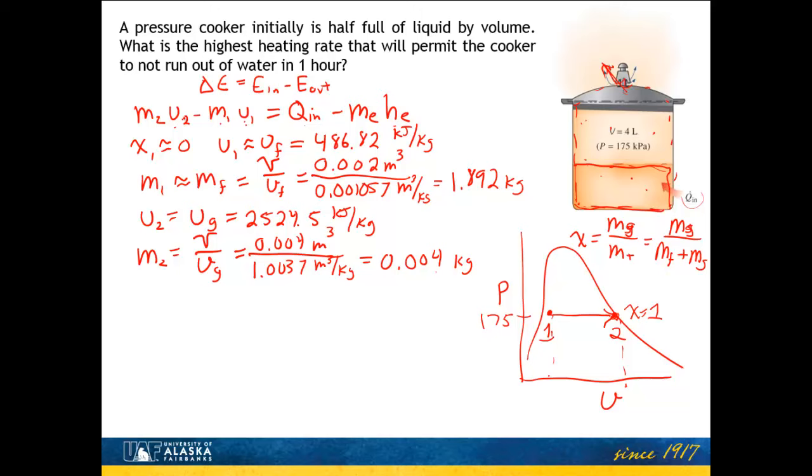M1, U1, M2, and U2 are taken care of. I need the two terms on the right side of the equation. To find the mass exiting, I'll use a mass balance. How much mass leaves? I know M1 and M2. The difference is how much leaves, so M exit is M1 minus M2, which is 1.888 kilograms.